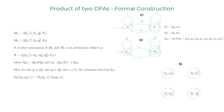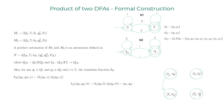Now let's look at delta_N. Delta_N of (p0, q0) on input 0: using the definition, this expands to (delta1 of p0 comma 0, delta2 of q0 comma 0). Looking at machine 1, p0 on 0 goes to p1; looking at machine 2, q0 on 0 stays at q0. So we end up with the pair (p1, q0). Similarly, delta_N of (p1, q0) on input 0 expands and gives another pair.